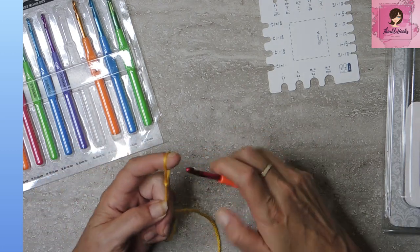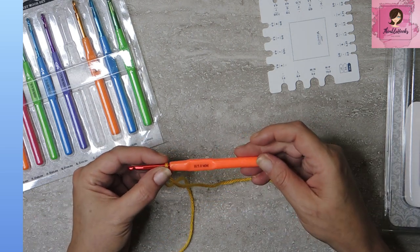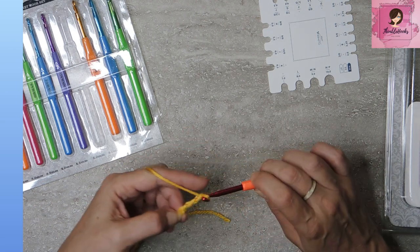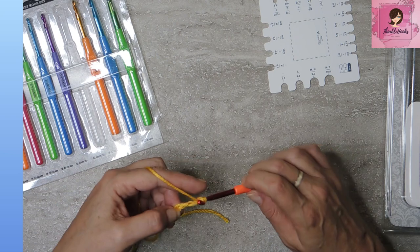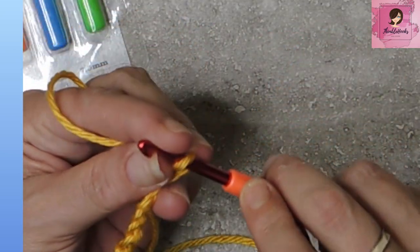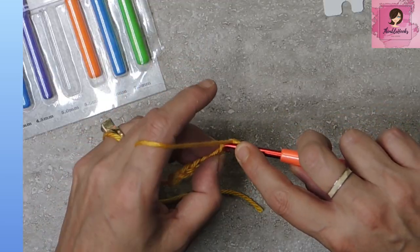I've got a little bit of Caron Simply Soft Gold right here, and this is my five millimeter. Let's just do a few chains, see if I'm getting any snagging, and I am not, which is nice. It means that inside my hook all around the tip is very smooth. That's a bonus for sure.